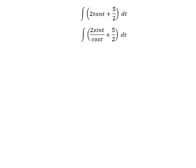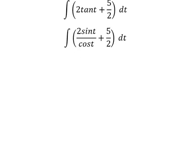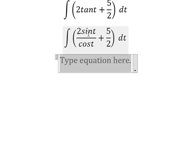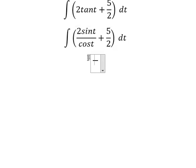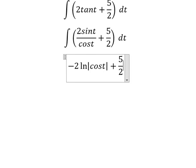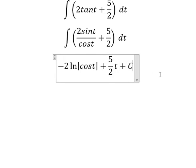And now we have the final answer. The integration of sin(t) over cos(t), we have negative two ln of the absolute value of cos(t). The integration of this one we have five over two t, and we put C.